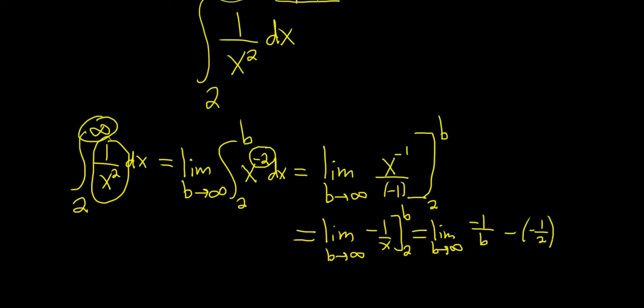Good stuff. Alright, so let's see here. We plug in the b, subtracted, plugged in the 2. Let's write it one more time. This is the limit as b approaches infinity. So we have negative 1 over b. And then minus and minus is plus. So plus 1 half.